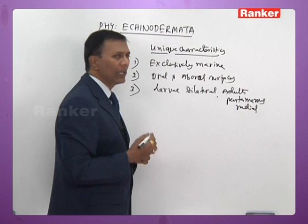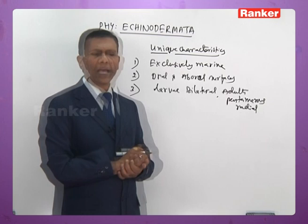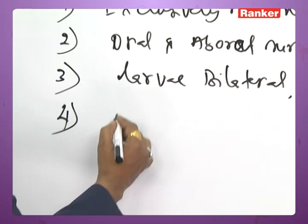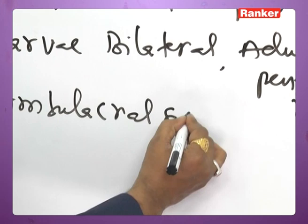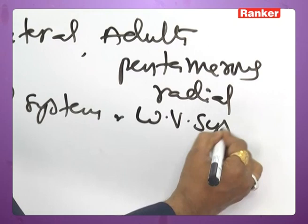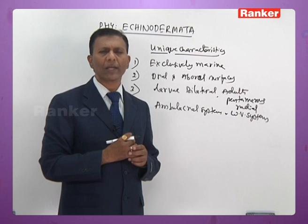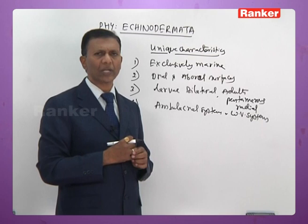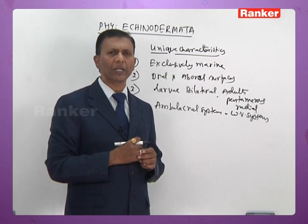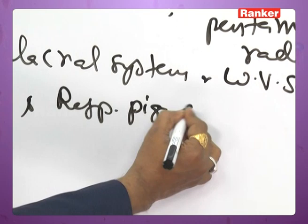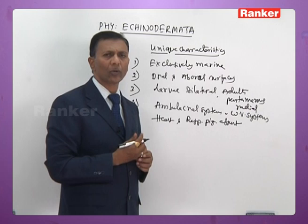Another unique characteristic feature is that the larvae are bilaterally symmetrical while the adults are pentamerally symmetrical, with five identical halves called antimeres. The presence of an ambulacral system or water vascular system is another unique characteristic, where the main function is locomotion. Besides locomotion, it also helps in respiration, excretion, and food capture.